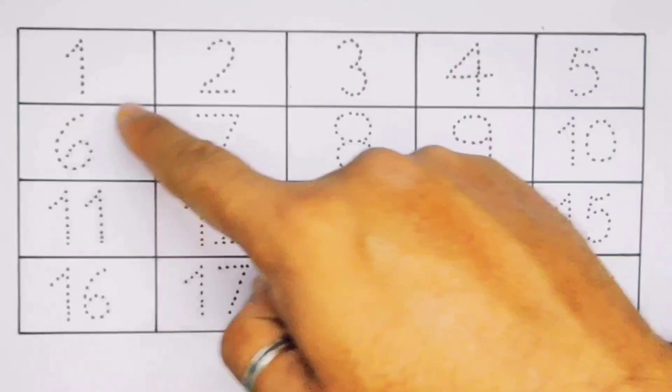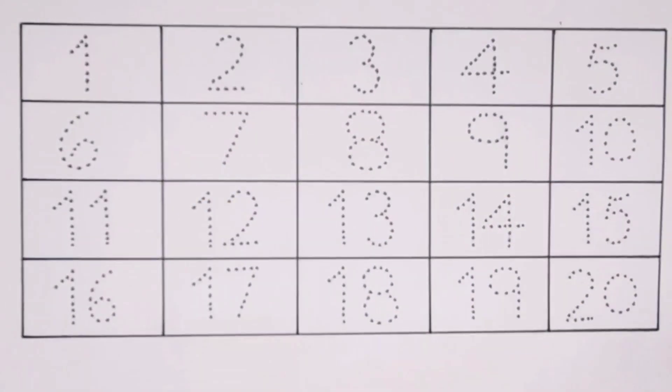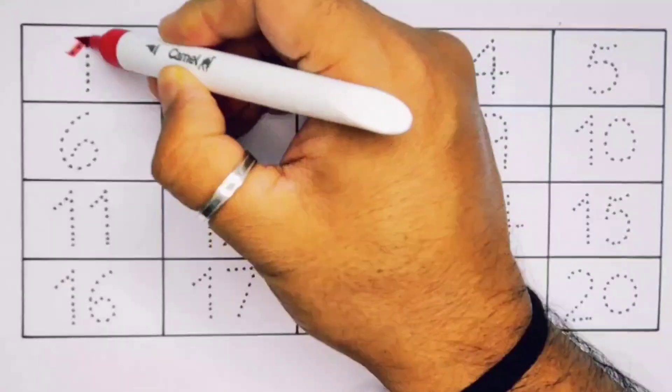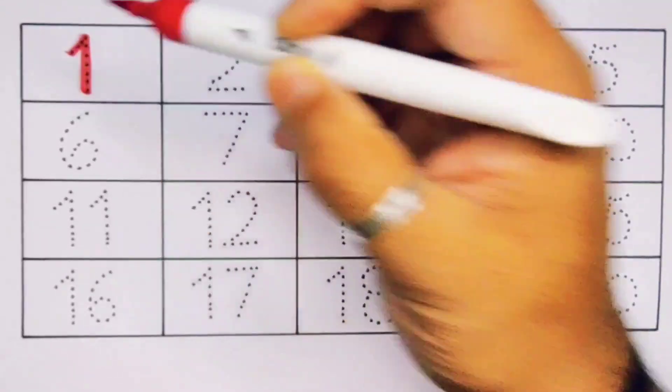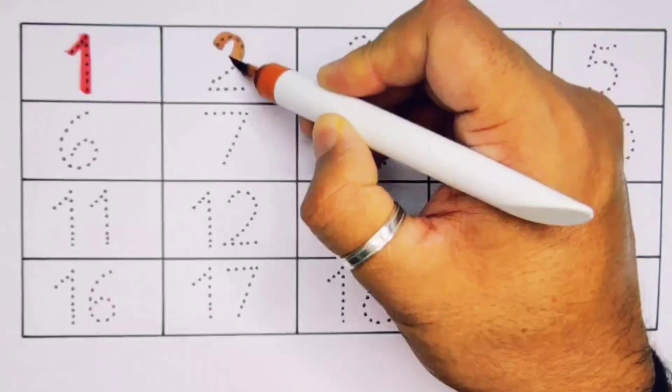Now let's learn the numbers counting 1 to 20. First 1, number 1. Next 2, number 2.